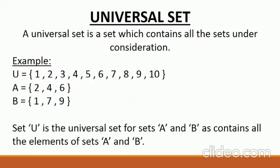A Universal Set is a set which contains all the sets under consideration. For example, set U = {1, 2, 3, 4, 5, 6, 7, 8, 9, 10}, set A = {2, 4, 6} — you can see the elements of set A, 2, 4, 6, all belong to set U. And set B = {1, 7, 9} — all the elements of set B also belong to set U. That is why set U is the universal set.